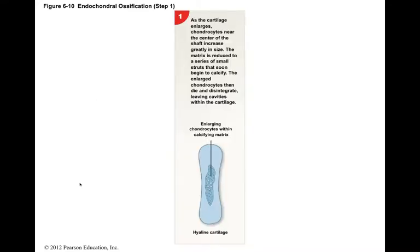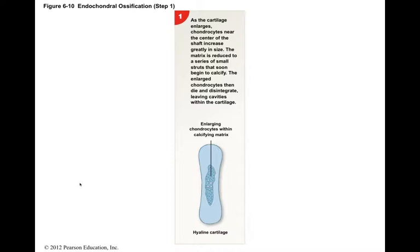In step one, as the cartilage enlarges, chondrocytes near the center of the shaft begin to greatly increase in size. The cells start to enlarge, their lacunae expand, and the matrix is reduced to a series of thin struts. These thin struts soon begin to calcify. Now the enlarged chondrocytes are deprived of nutrients because diffusion can't occur through this calcified cartilage. These chondrocytes become surrounded by calcified cartilage, and they die and then disintegrate.